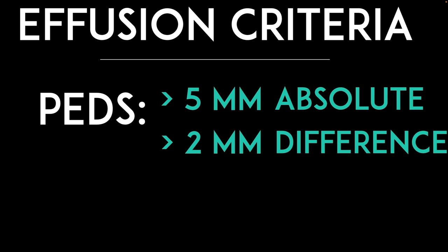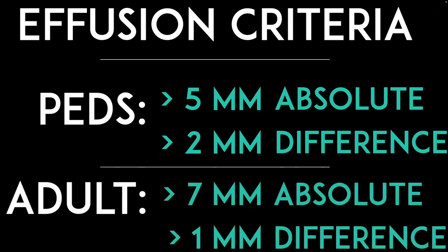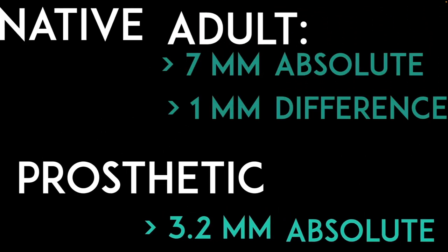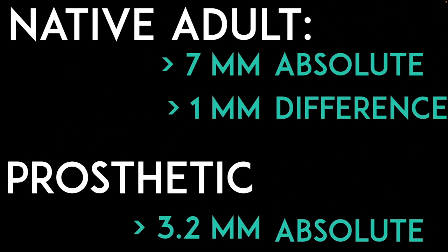For measurement thresholds, in pediatric patients: 5mm absolute size or a 2mm difference between sides. In adults it's similar but with a larger spread: 7mm absolute or 1mm difference on either side. For prosthetic hips it's a little different — 3.2mm, which is probably a statistical cutoff. My favorite website for orthopedic reference is Ortho Bullets — I've used it since residency and it usually has this information.